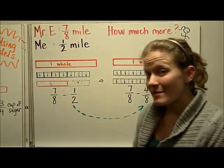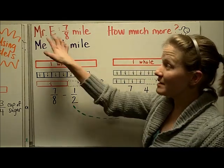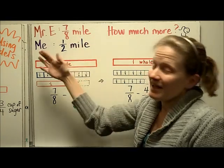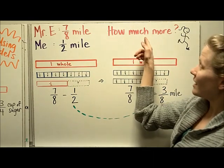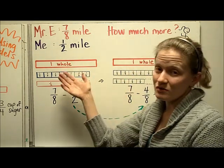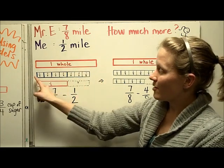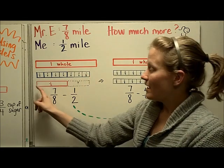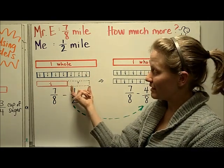We can make the same kind of exchanges if we are doing a subtraction problem. One day Mr. E ran seven-eighths of a mile, and I got tired and only ran one-half of a mile. If we want to figure out how much more Mr. E ran than I did, we could use this model. I have the one whole piece, representing Mr. E's seven-eighths and my one-half. When we do a subtraction problem, we can think about it like a difference — what part of it is different here?